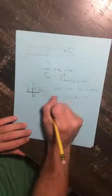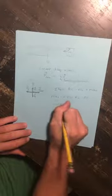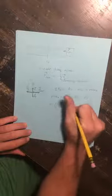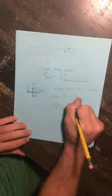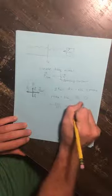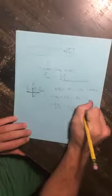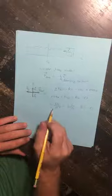And so we end up with the mass times the second derivative with respect to time of the position, plus b times the first derivative with respect to time of the position, plus k times x is equal to zero.